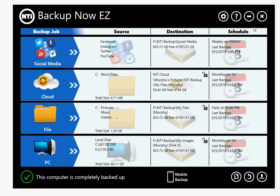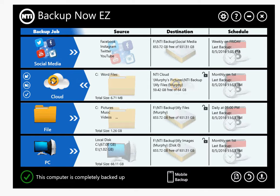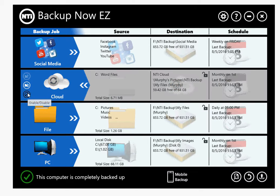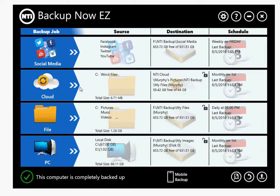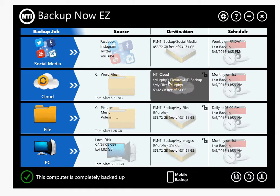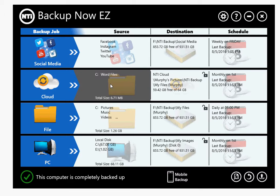Alright, let's get to the demo. Last time I showed you social media backup. This time we'll go to the cloud backup. Clicking on the chevron for the cloud job, it'll show you that I can backup, I can restore, and I can also disable the job and enable the job. Clicking the chevron will also close that panel. So the job is already set up with source, destination, and schedule, but we'll just go over it one by one.